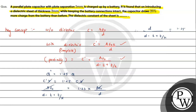The plate separation d = 5 mm = 5 × 10⁻³ m and the dielectric thickness t = 2 mm = 2 × 10⁻³ m. Substituting: 5 × 10⁻³ / (5 × 10⁻³ − 2 × 10⁻³ + 2 × 10⁻³ / k) = 1.25, which simplifies to 5k / (3k + 2) = 1.25.